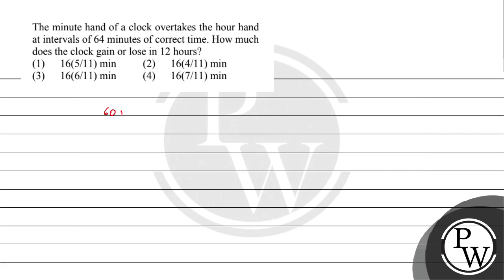60 by 55 into 60, right? That will be your 65 5 by 11 minutes. But they are together after 64 minutes. The gain in 65 minutes...